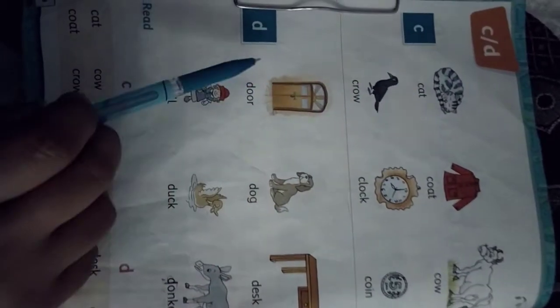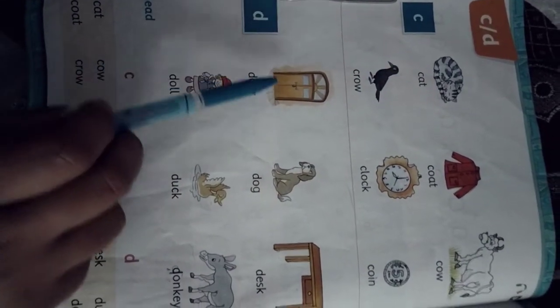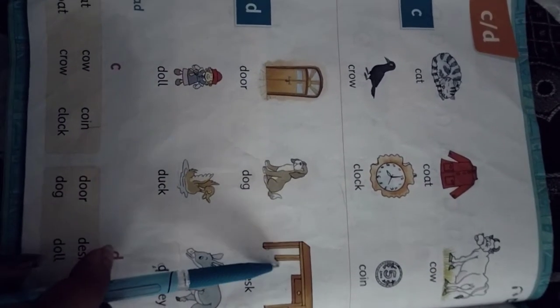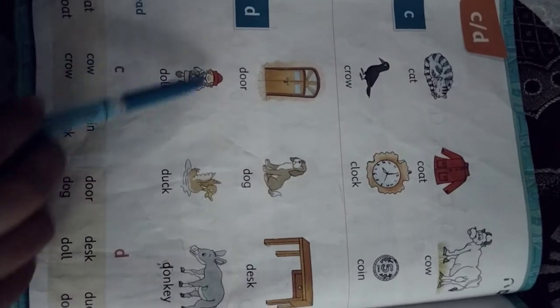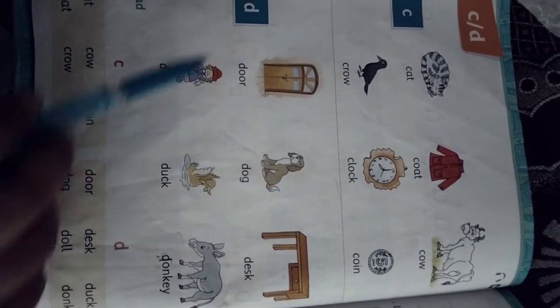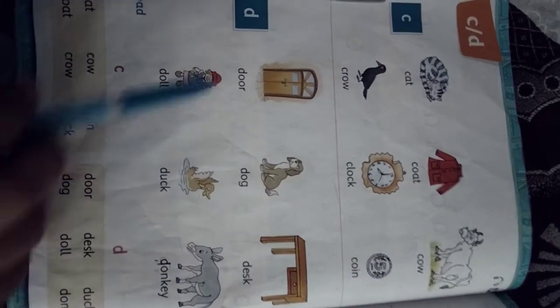Now, after C, D. D for Dog, D for Dog, D for Desk, D for Doll, D for Duck, D for Donkey.